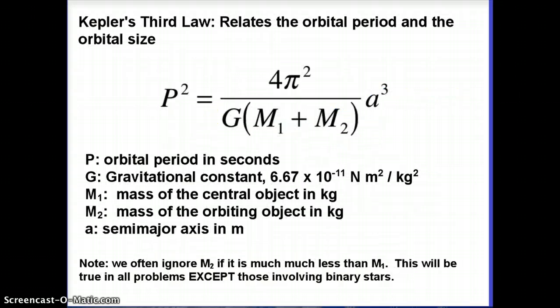Kepler's Third Law is a mathematical equation. It relates the orbital period and the orbital size. By orbital period, I mean how long does it take to complete exactly one orbit. We represent that with the letter P for period.